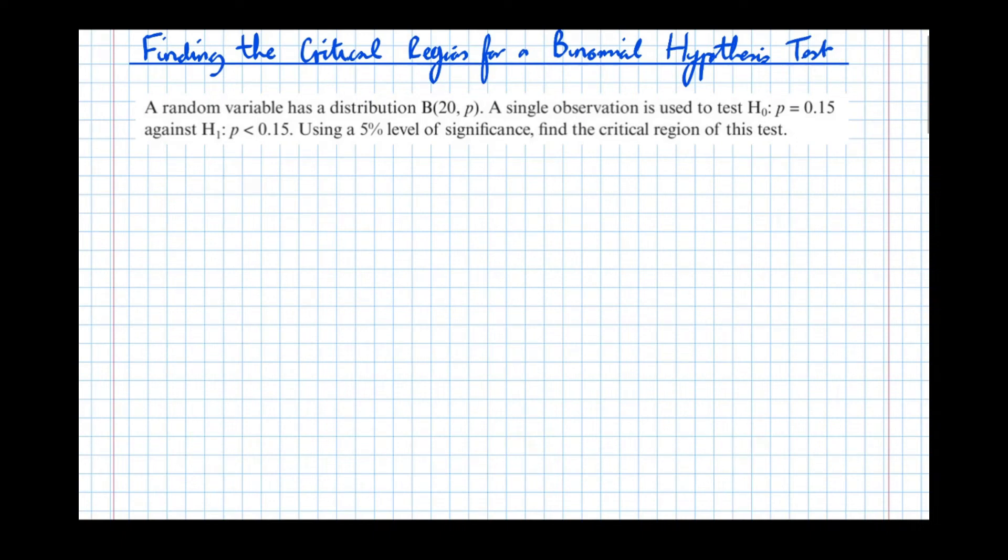So in this video, we're going to have a look at finding the critical region for a binomial hypothesis test. A critical region is the set of possible observations that would lead to the null hypothesis being rejected.